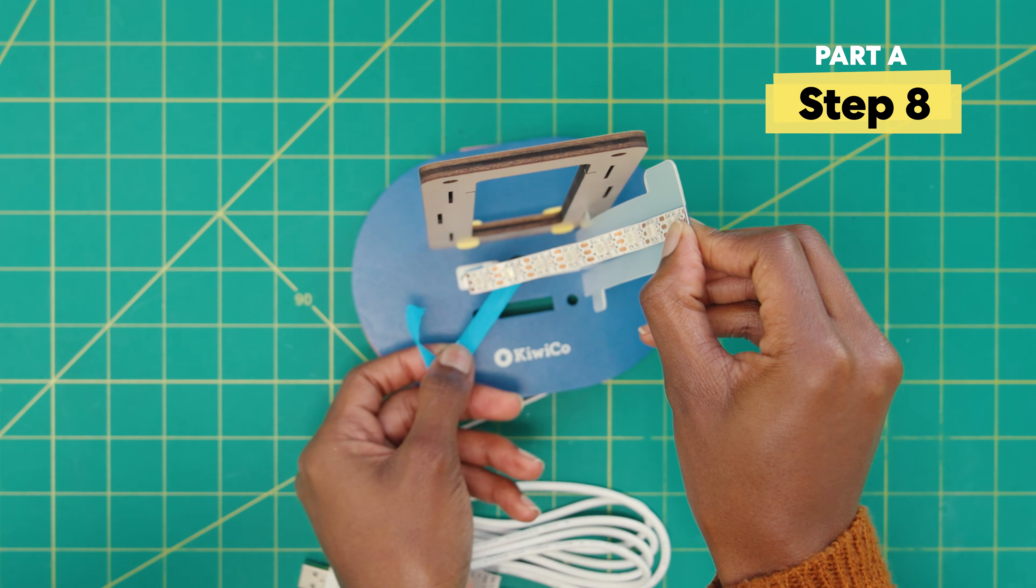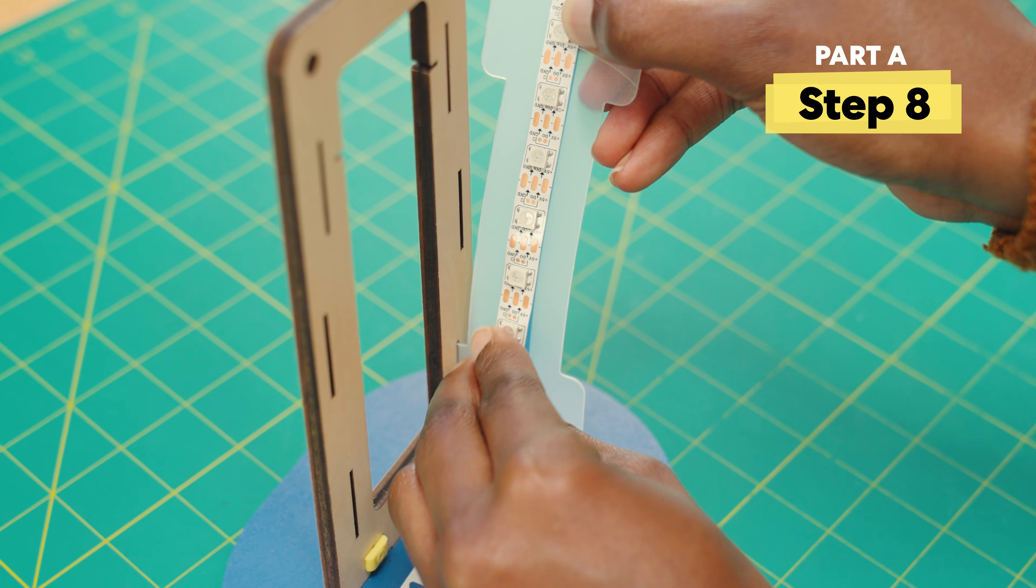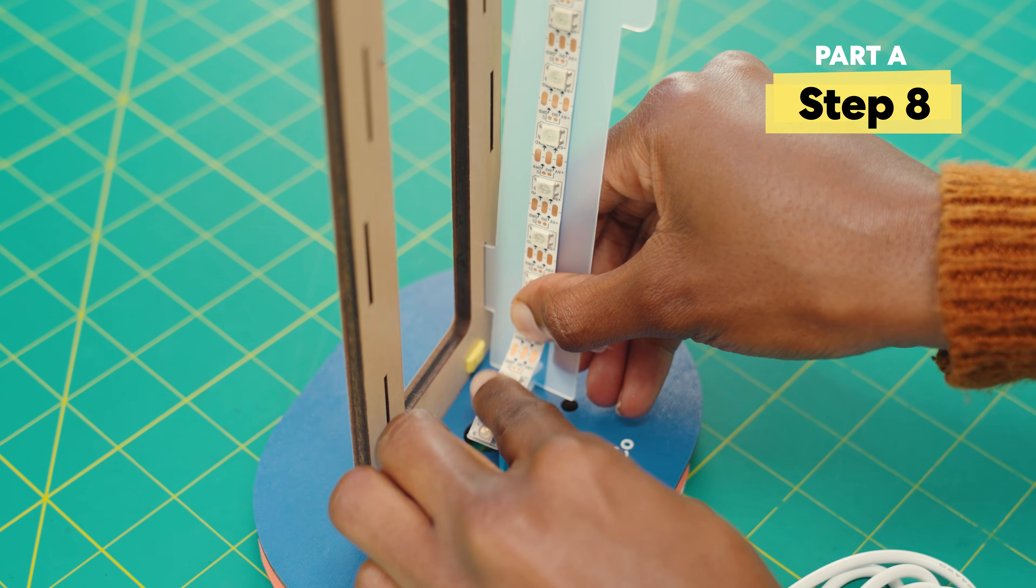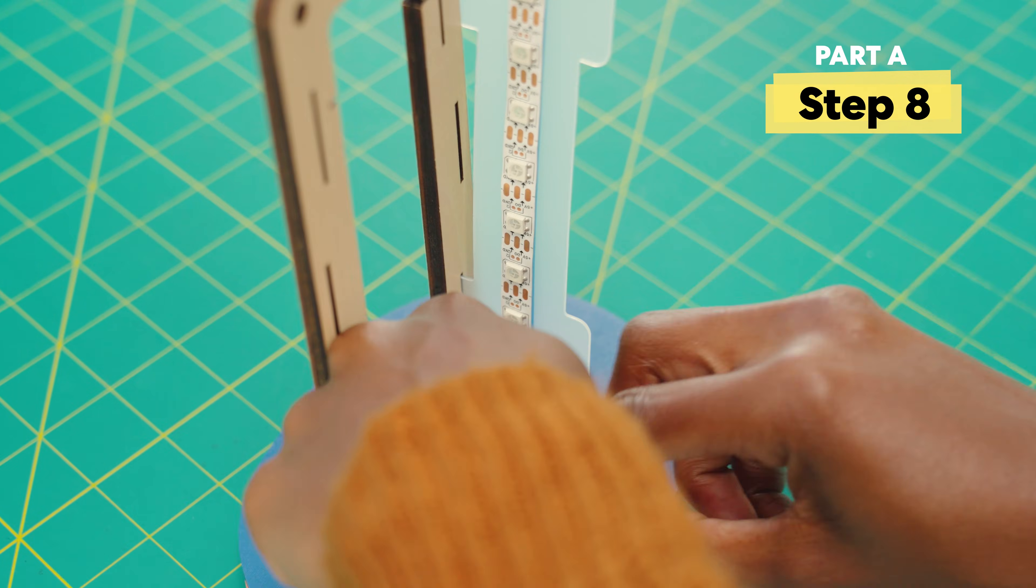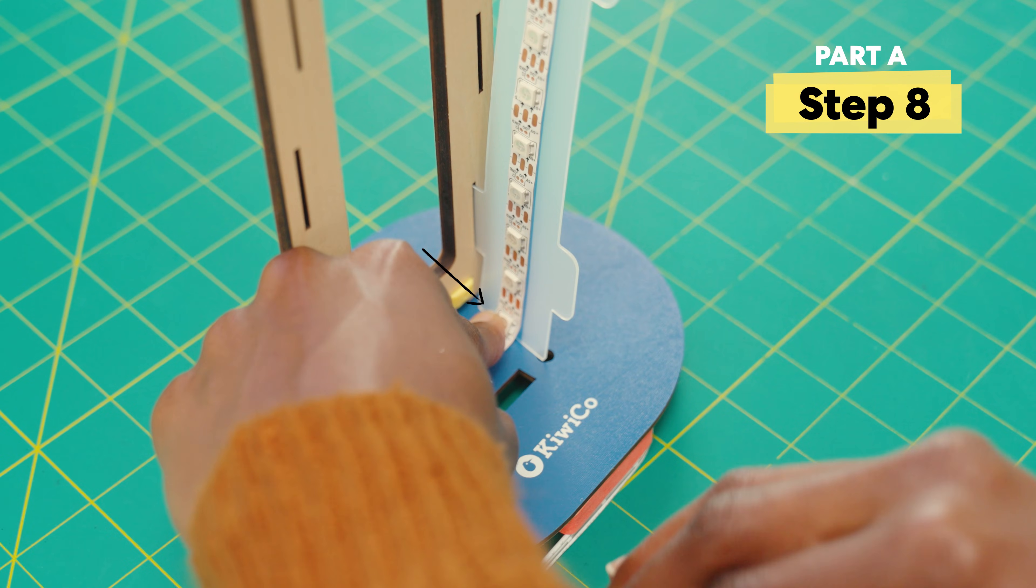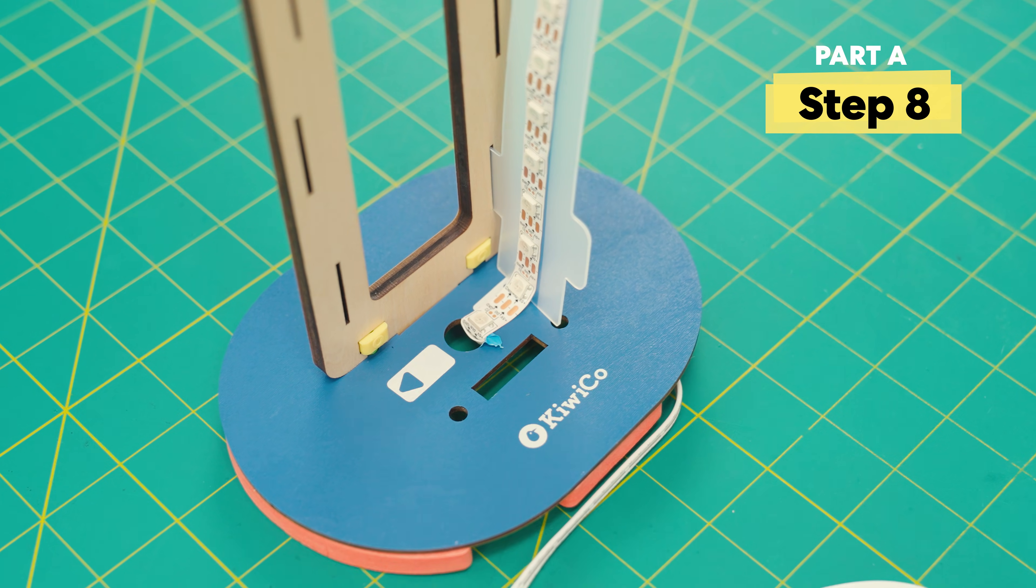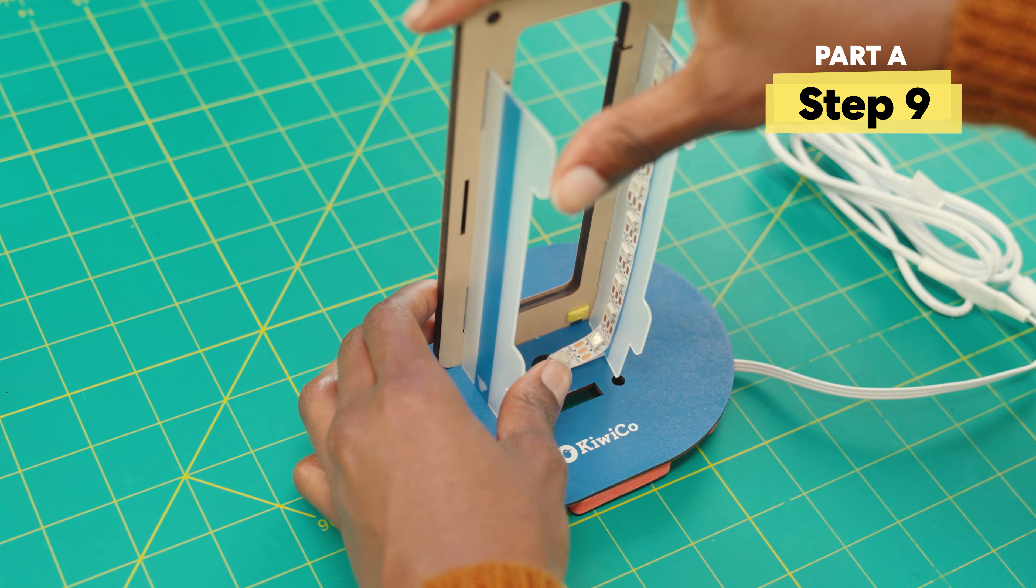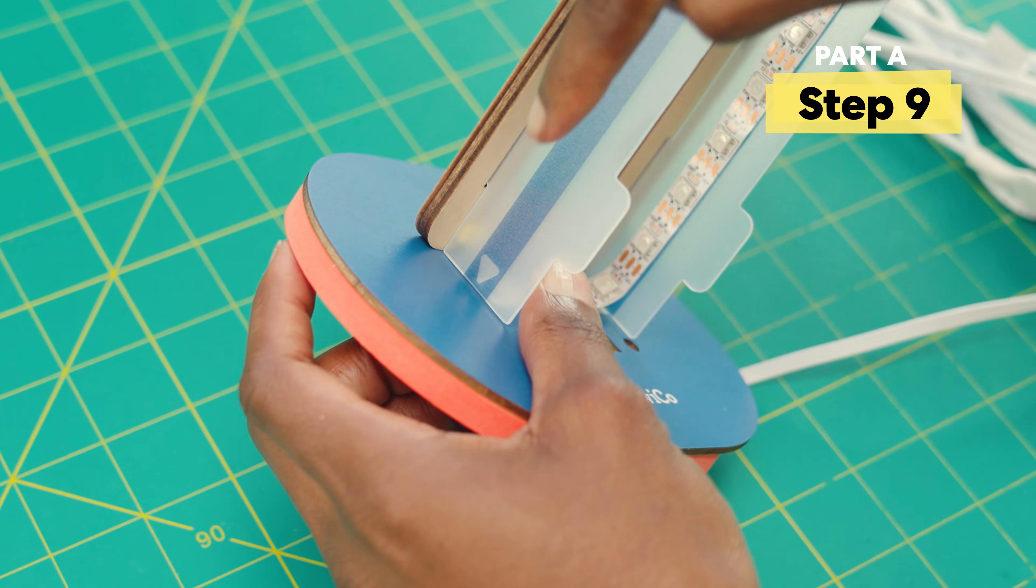Okay, peel the rest off and stick it here. Press this spot to stick. All right, now grab the other tab strip and slot on the other side. Make sure the arrow is pointing down.